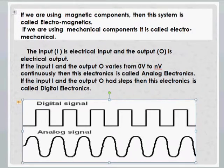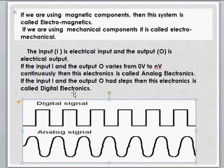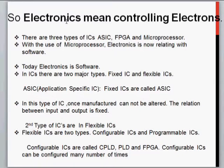Now in case of electronics, we can use analog signals and digital signals. And now electronics depends upon the integrated circuits, the ICs. So there are three types of ICs: ASIC, FPGA, and microprocessor.